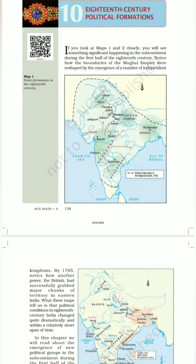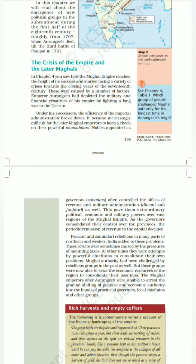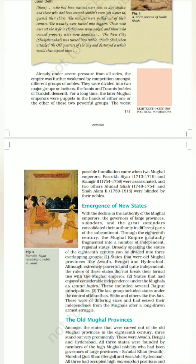If you see NCERT chapter 10, you will see how the boundaries of the Mughal Empire were shaped by the emergence of a number of independent kingdoms, and how by the first half of the 18th century this had started, and by 1765 the British had grabbed major chunks of territory in eastern India.